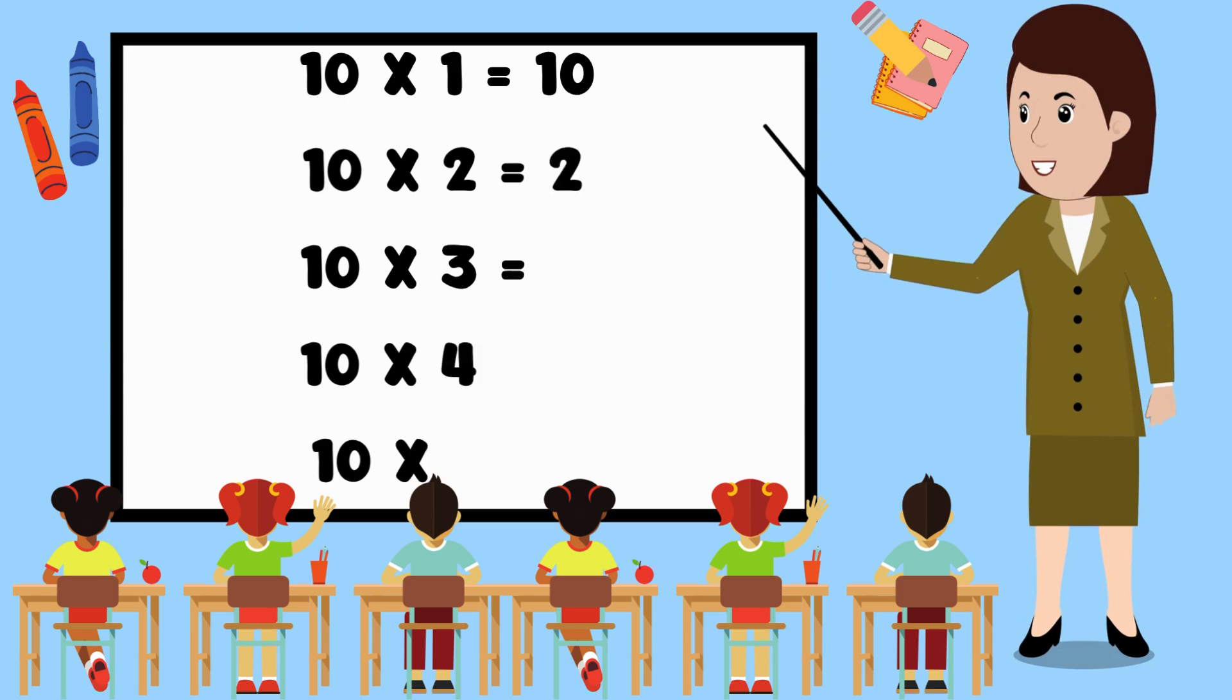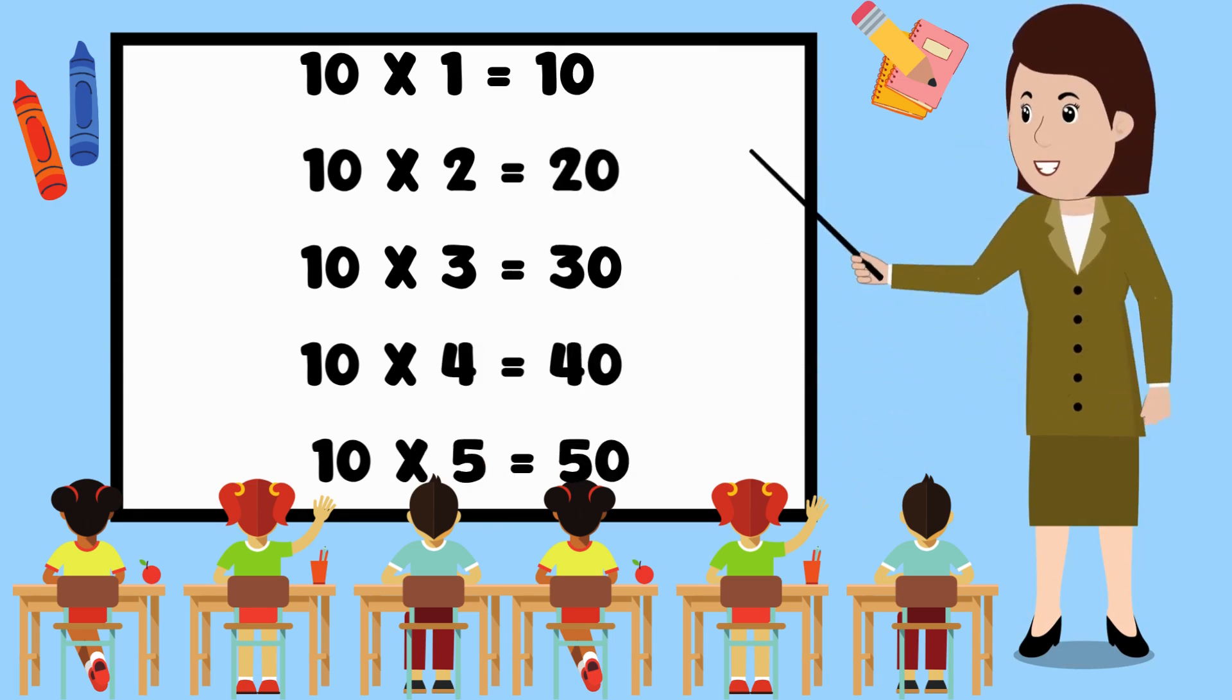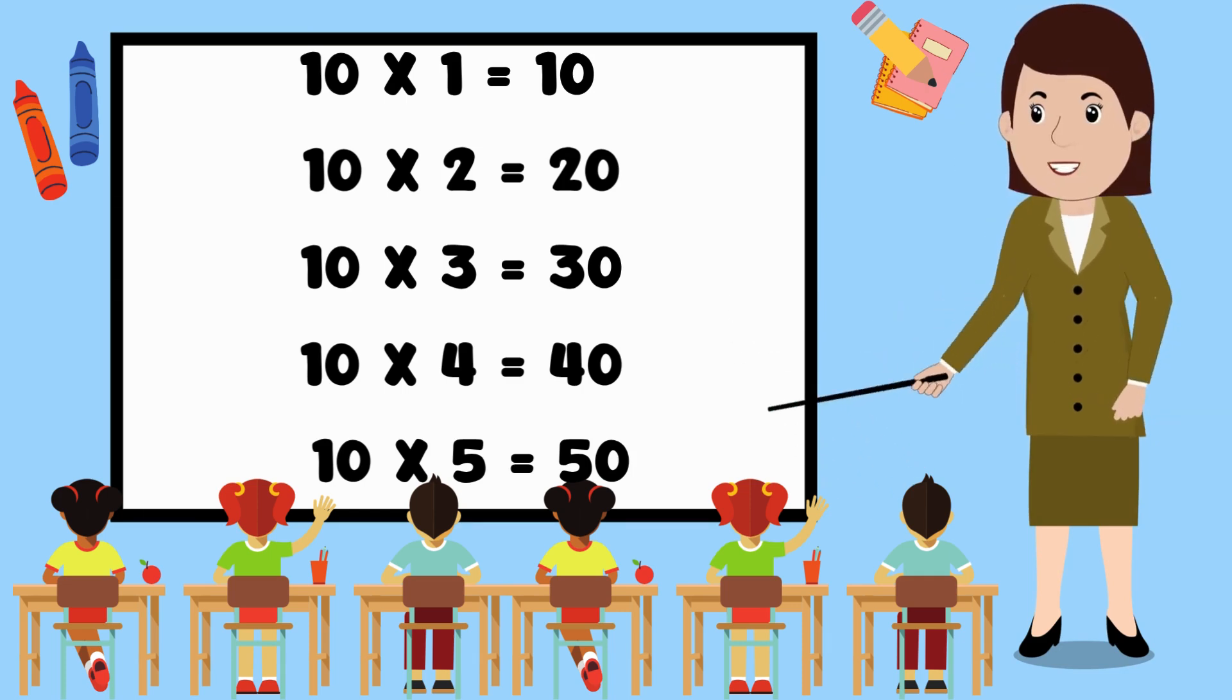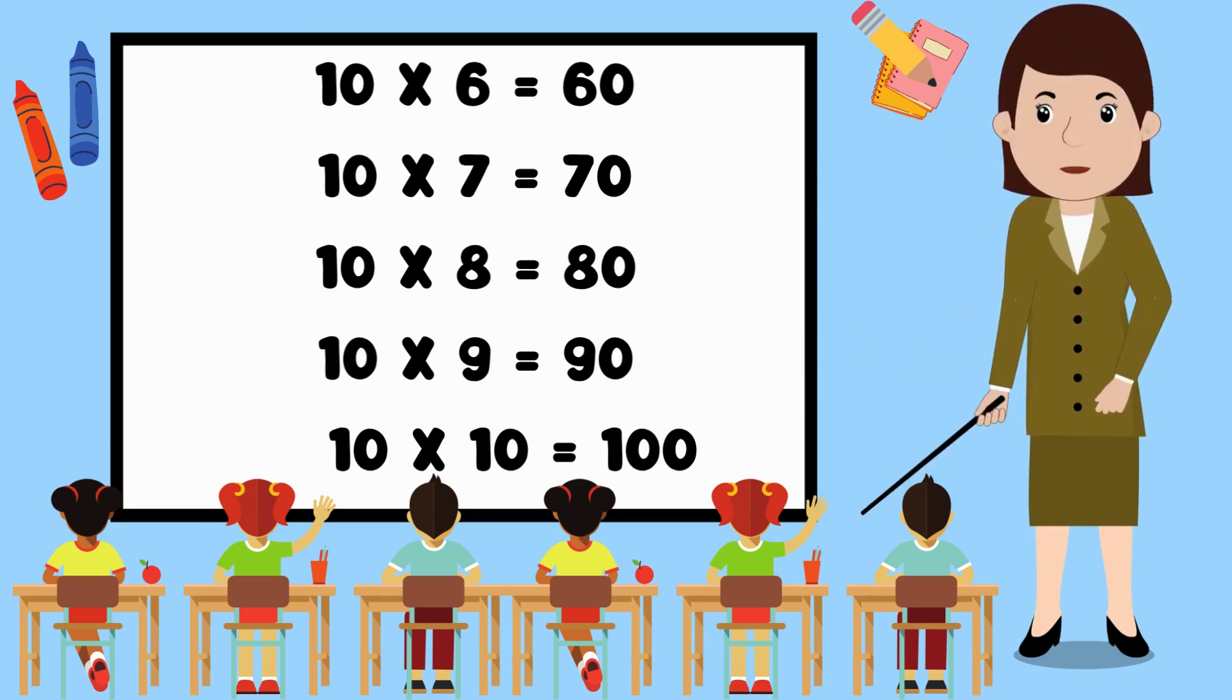Let us repeat once again. 10 ones are 10. 10 twos are 20. 10 threes are 30. 10 fours are 40. 10 fives are 50. 10 sixes are 60. 10 sevens are 70. 10 eights are 80. 10 nines are 90. 10 tens are 100.